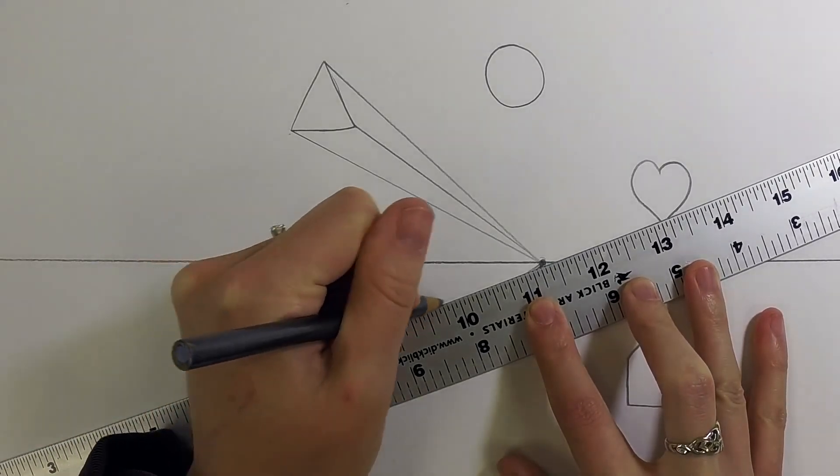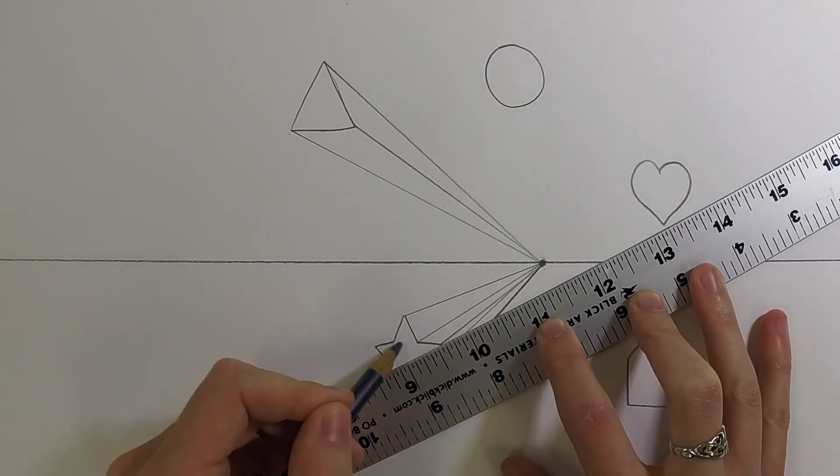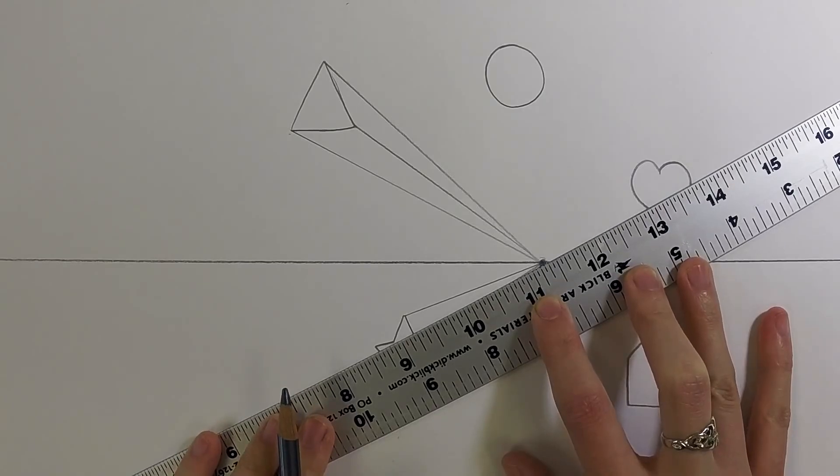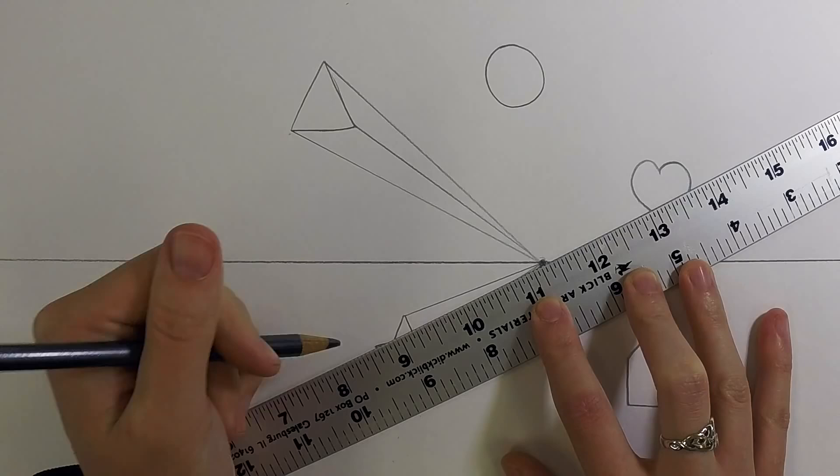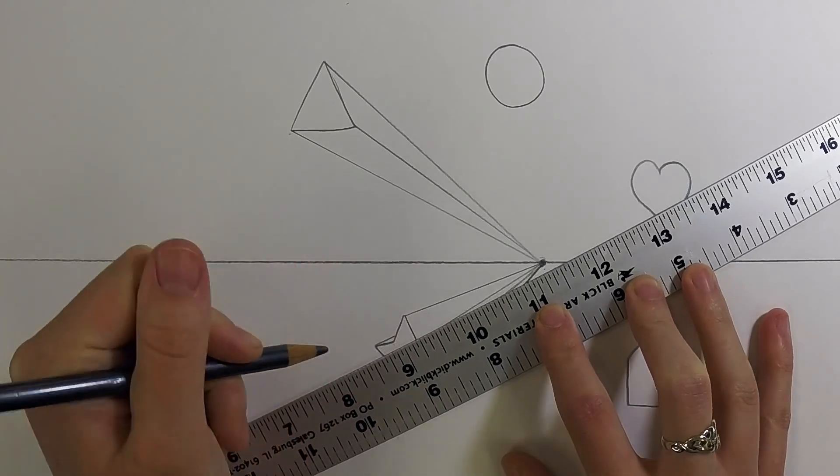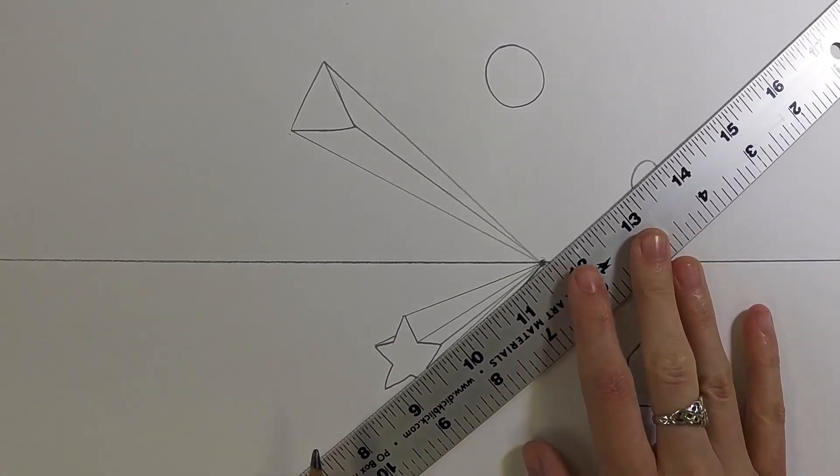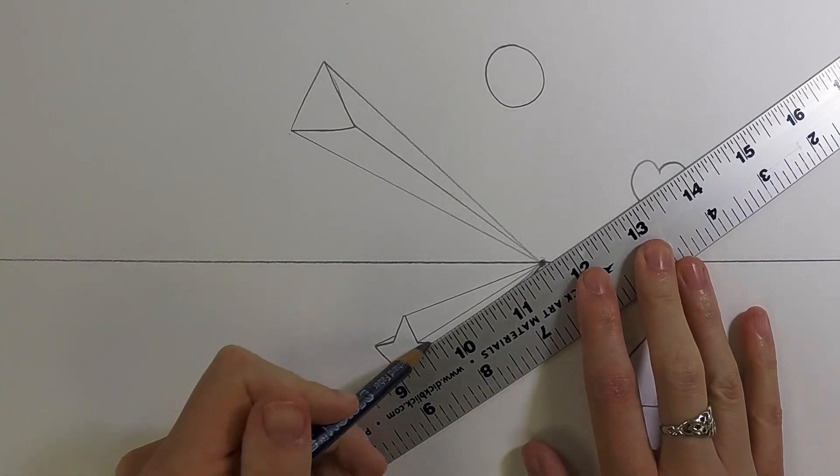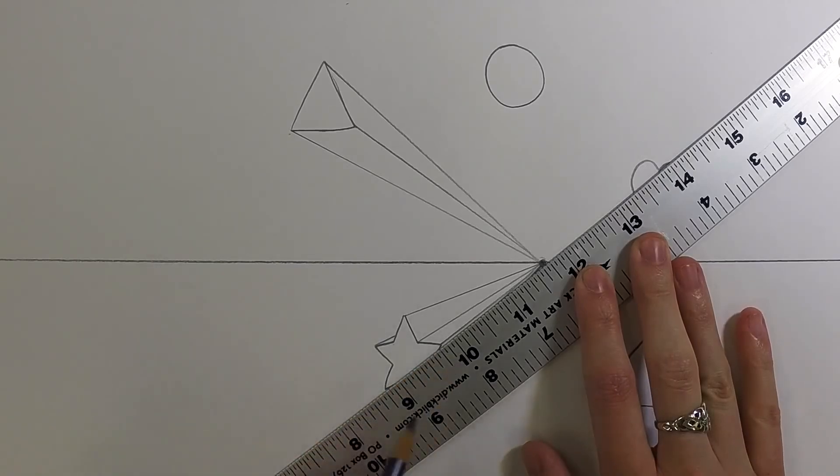As we start to move towards the other side of the triangle, we're going to start noticing that some of these corners would go through the shape. That means we wouldn't have to draw them because they'd be covered up anyway. So just check if your line goes all the way through a shape and not show anywhere else outside of the shape, then you don't need to draw it.